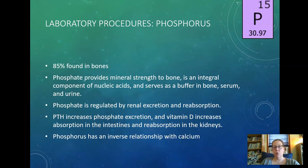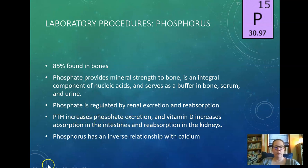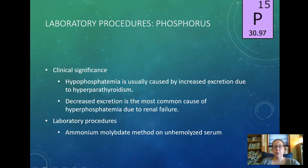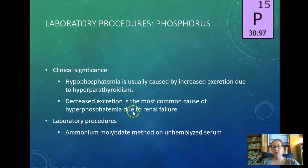Phosphorus often has an inverse relationship with calcium, especially with parathyroid hormone — PTH increases calcium absorption but increases phosphate excretion, so when one goes up, the other tends to go down. Clinically: hypophosphatemia is usually caused by increased excretion due to hyperparathyroidism. Decreased excretion is the most common cause of hyperphosphatemia, usually due to renal failure — so renal patients will have phosphate issues. The lab procedure is usually an ammonium molybdate method on unhemolyzed serum.